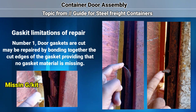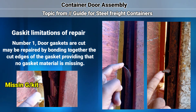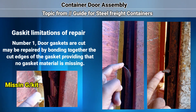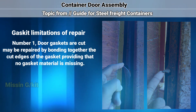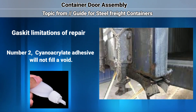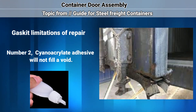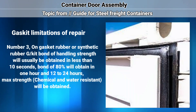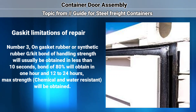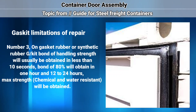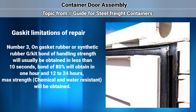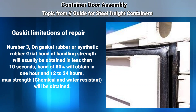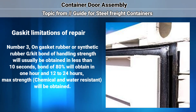Now let's talk about door gaskets and limitations of repairing. Number 1: door gaskets that are cut may be repaired by bonding together the cut edges of the gasket, providing that no gasket material is missing. Number 2: cyanoacrylate adhesive will not fill a void. Number 3: for rubber or synthetic rubber gaskets, bond of handling strength will usually be obtained in less than 10 seconds. Bond of 80 percent will be obtained in 1 hour, and in 12 to 24 hours maximum strength will be obtained.